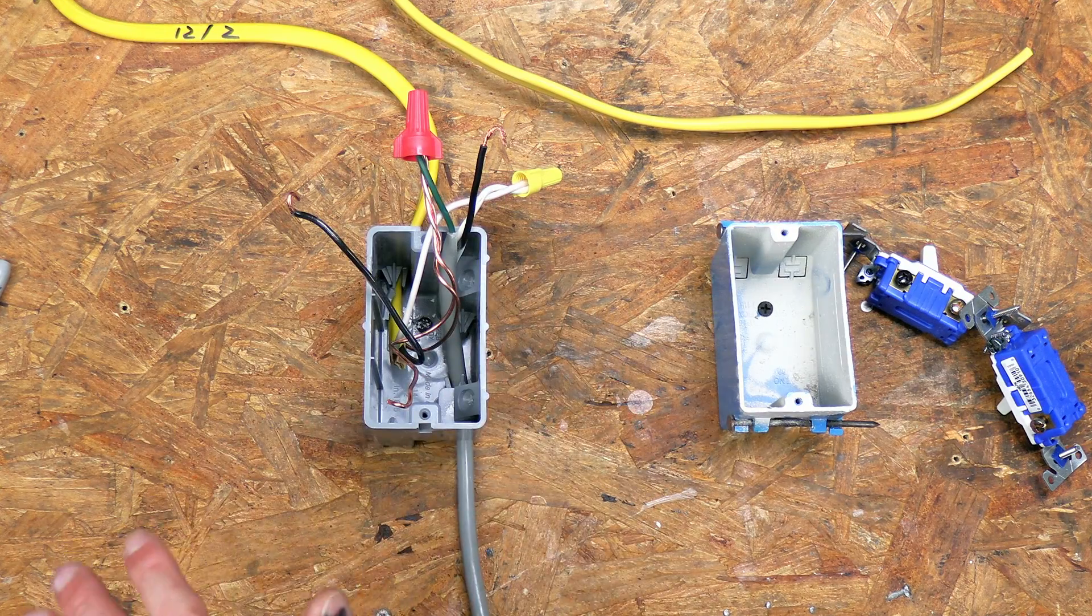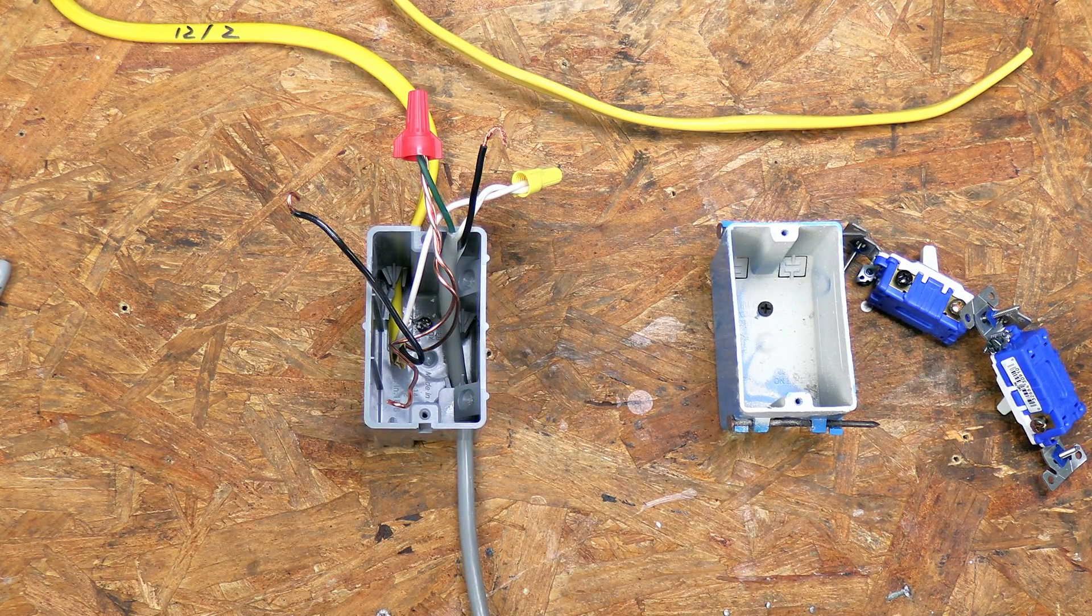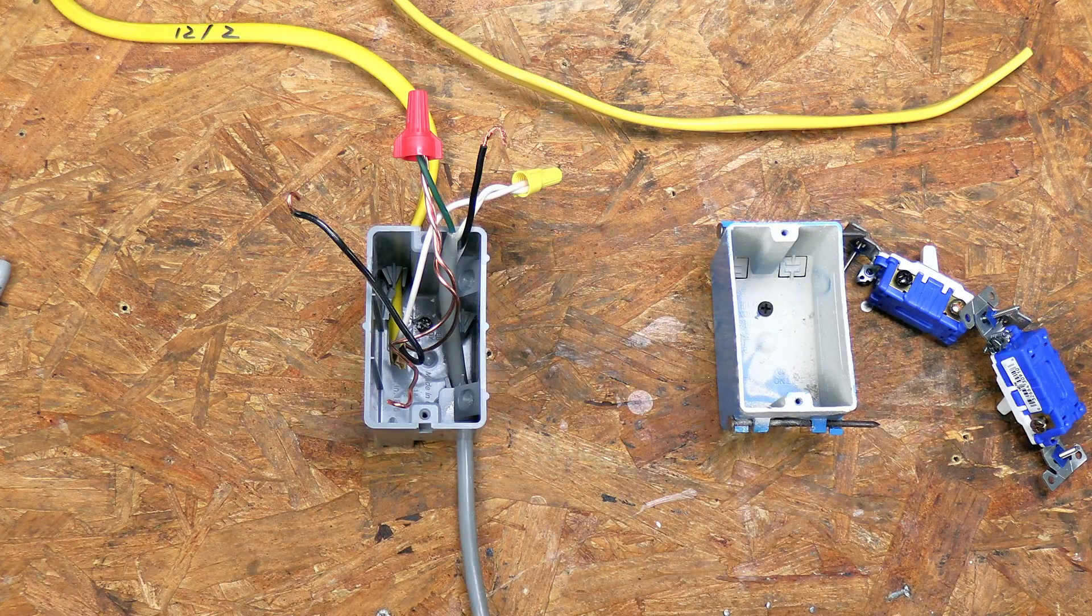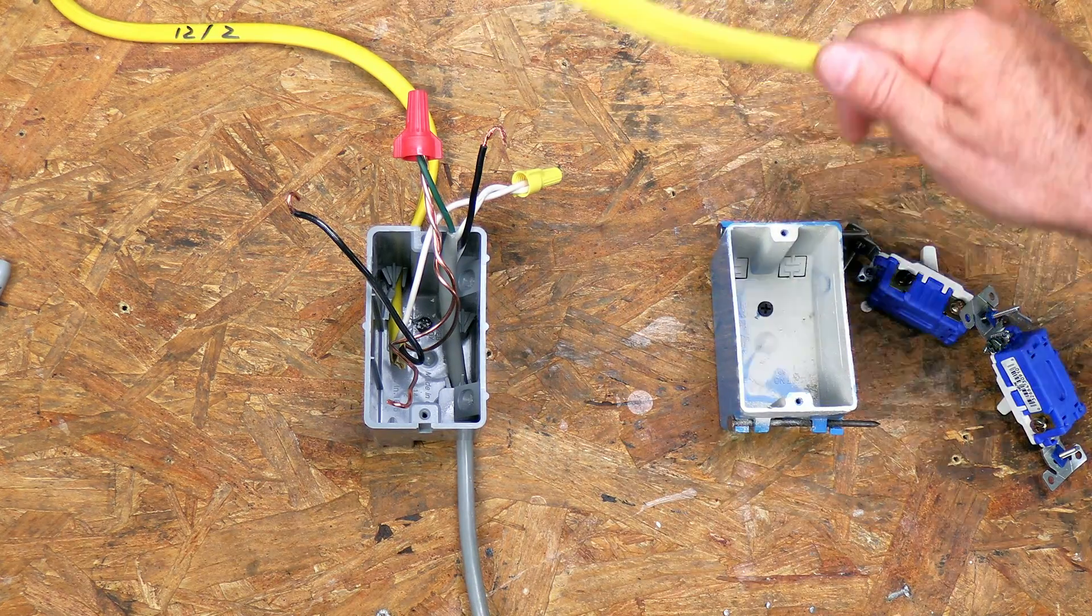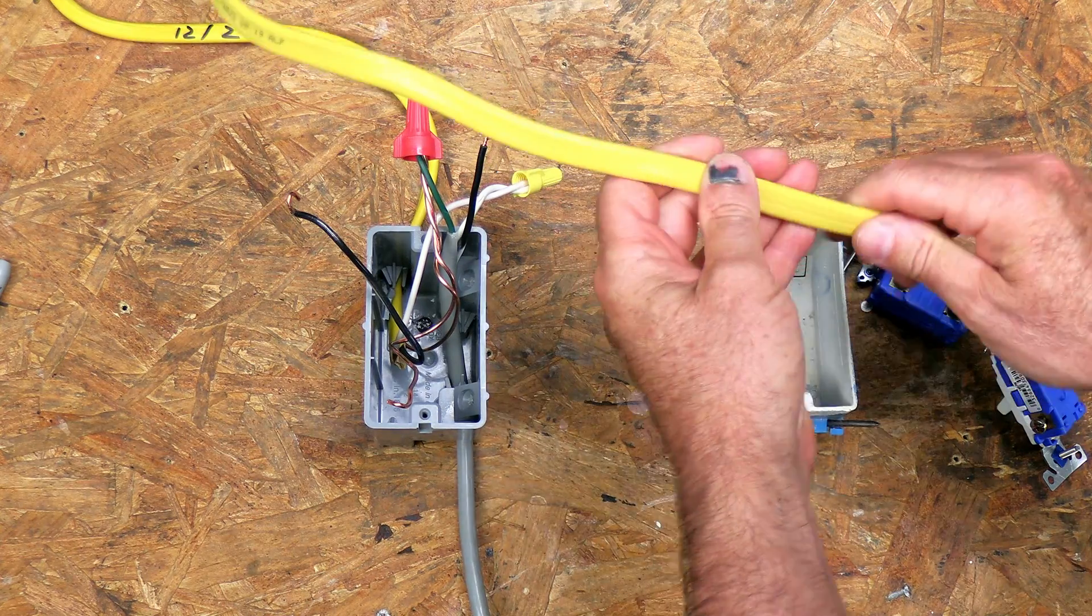So I've gone ahead and removed the switch, but I left the wiring all the same so that you can see what changes I'm going to need to make. To run this to the other secondary switch, you do need to run a 12-3. In this case, I'm running a 12-3.